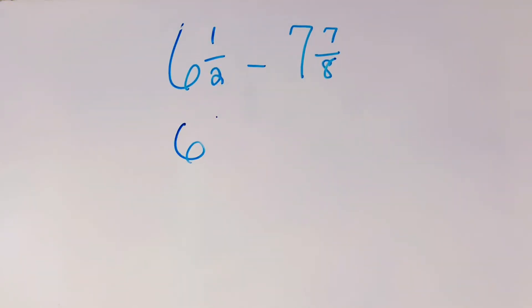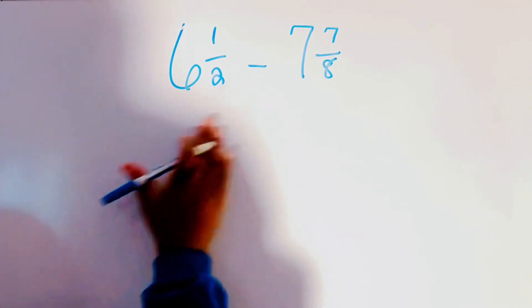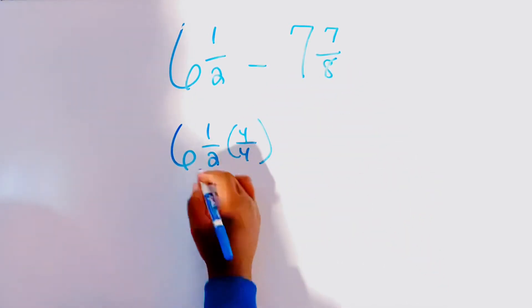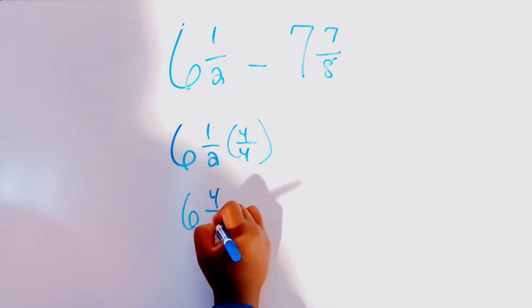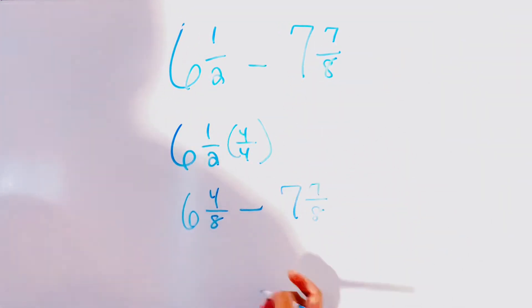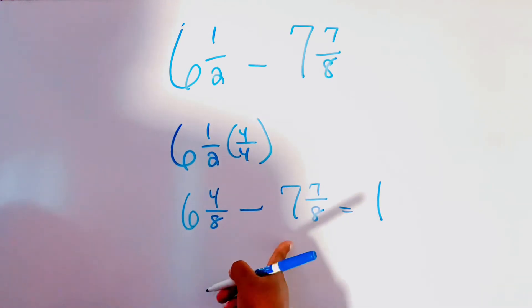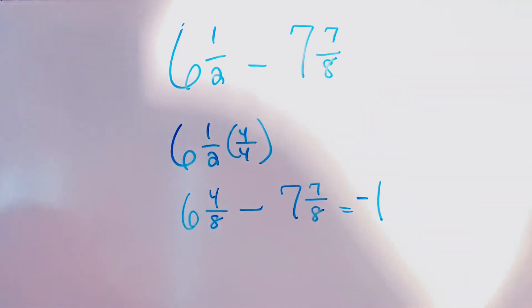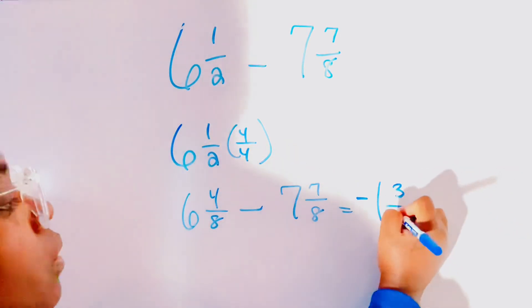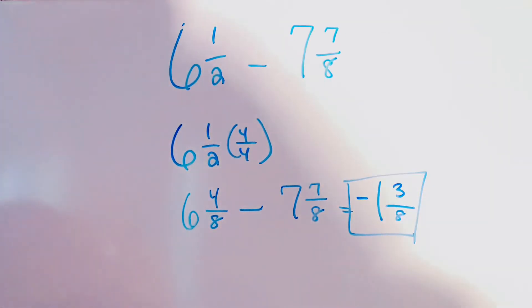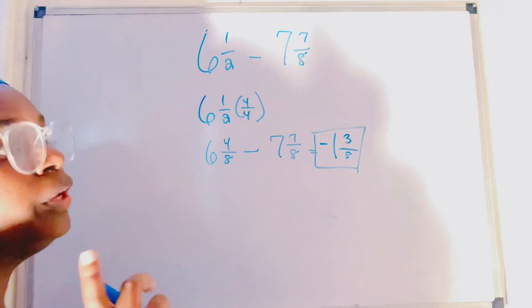So, another way you can solve this problem is, and that way, our denominators will be the same. And now we can subtract it, right? Minus 7 and 7 eighths. Now, we'll end up with negative 1 because 6 minus 7 is going to give us a negative number. 4 minus 7 is also going to give us negative 3 over 8. So, you may end up with negative 1 and 3 eighths or negative 11 over 8. It depends on what the question is asking you and what are your options.